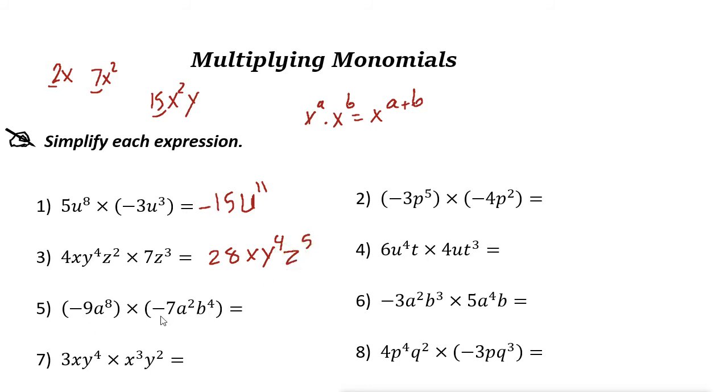Here, negative 9 times negative 7 is 63. A to the power of 8 times a to the power of 2 is a to the power of 10. And b, we don't have that one here, so just b to the power of 4.